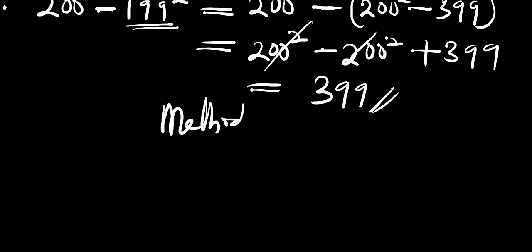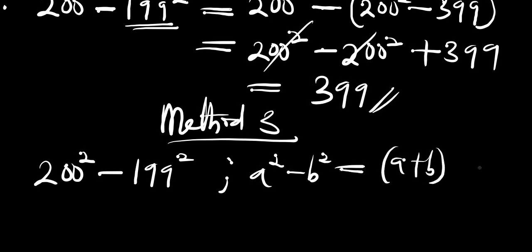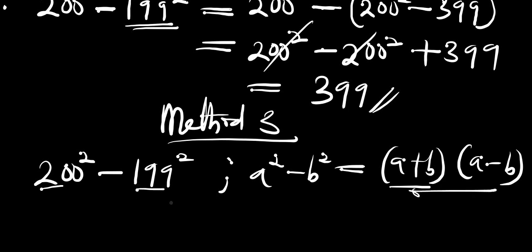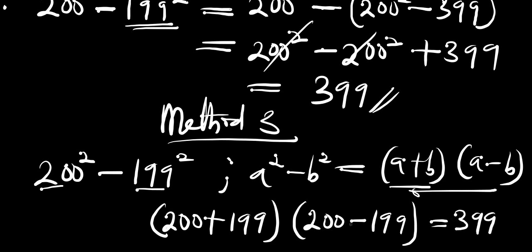Now for method 3, we use the difference of two squares. Recall that a squared minus b squared equals (a + b)(a − b). Here a is 200 and b is 199, so 200 squared minus 199 squared equals (200 + 199) times (200 − 199).